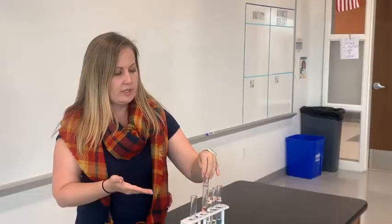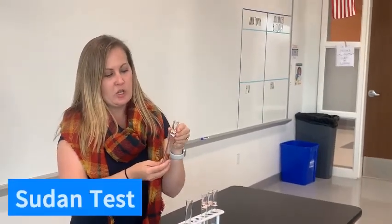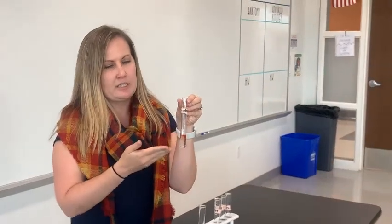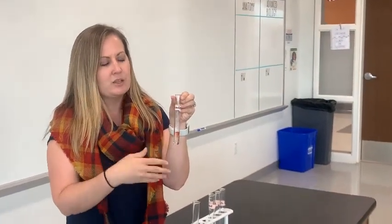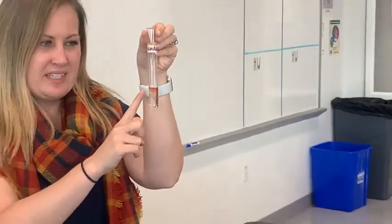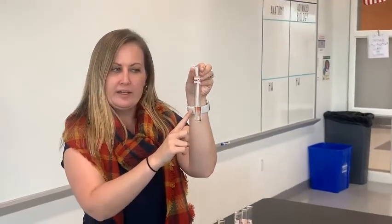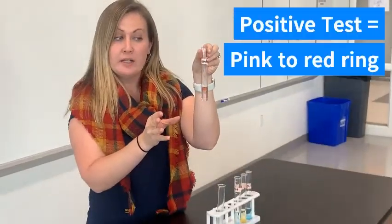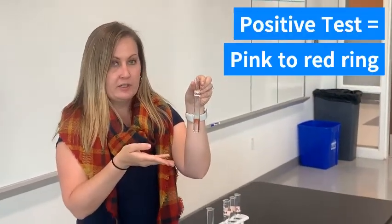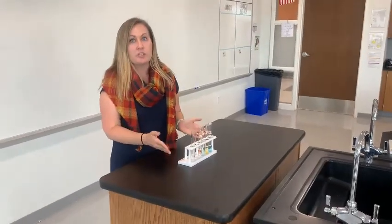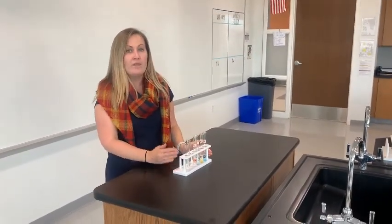The last one is the Sudan test. The Sudan test is one of the trickiest ones — it looks for the presence of lipids. Right now you can see it's a very light red, almost a pink. When this turns to a dark red, we can say that lipids are present. We saw no change in any of our water samples because we're using water as our control, and that's what we're going to compare all of our samples to.